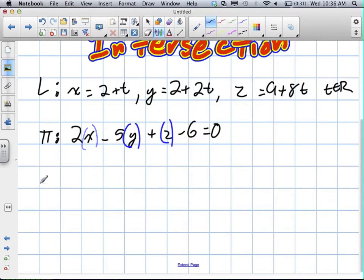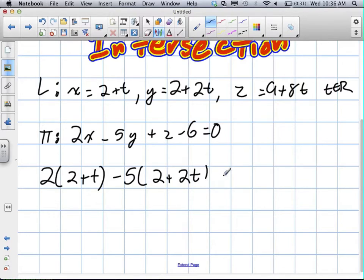So, we're going to get 2 multiplied by 2 plus t minus 5 times 2 plus 2t plus 9 plus 8t minus 6 is equal to 0.